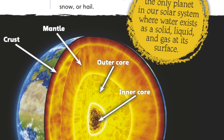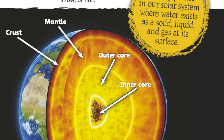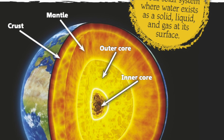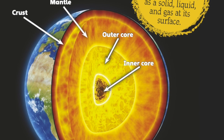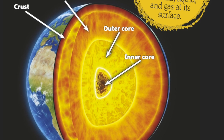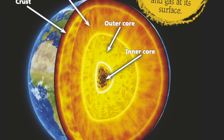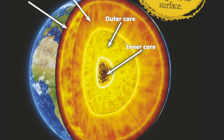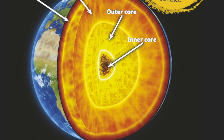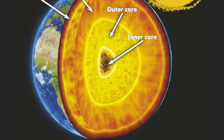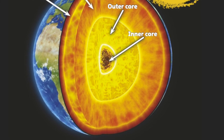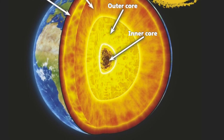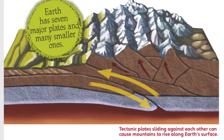For example, plants and animals depend on liquid water on Earth's surface to drink. As a gas, water can travel on winds to fall on places around the world as rain, snow, or hail.